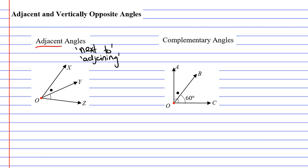In the diagram below, we have two adjacent angles. We have angle XOY, which is next to, or adjoining, angle YOZ. We say angle XOY is adjacent to angle YOZ.